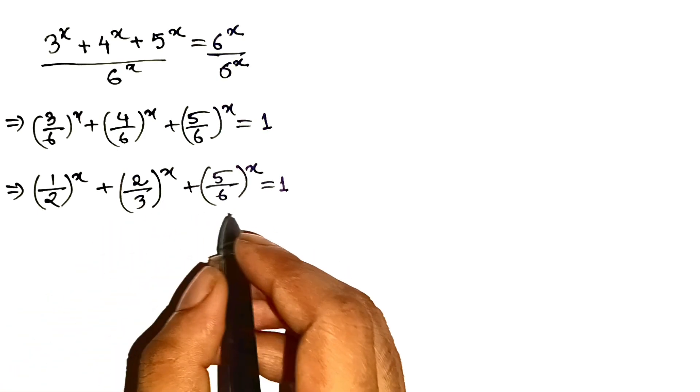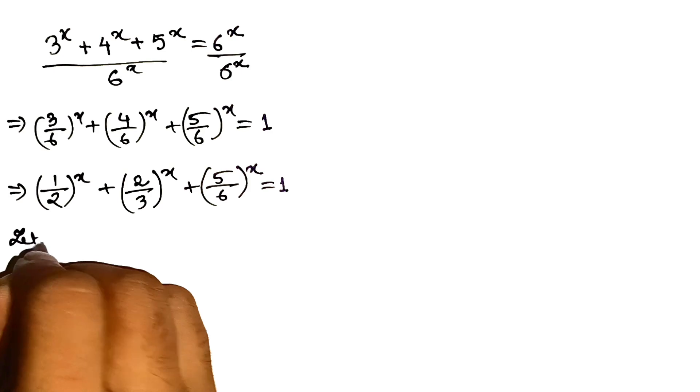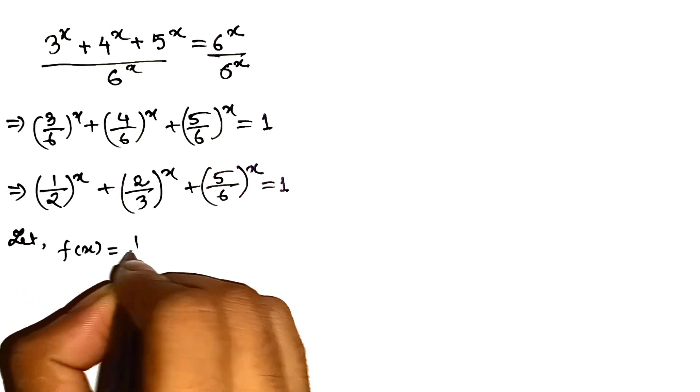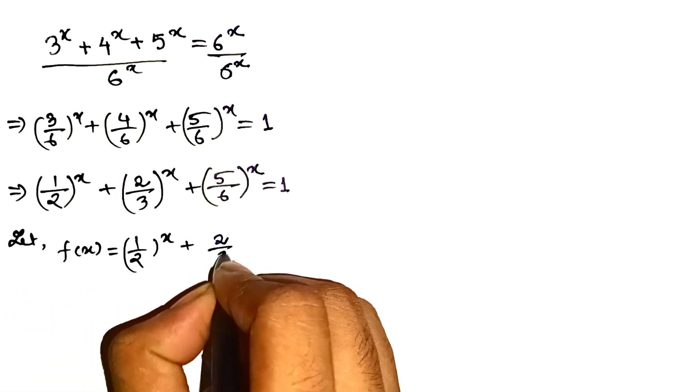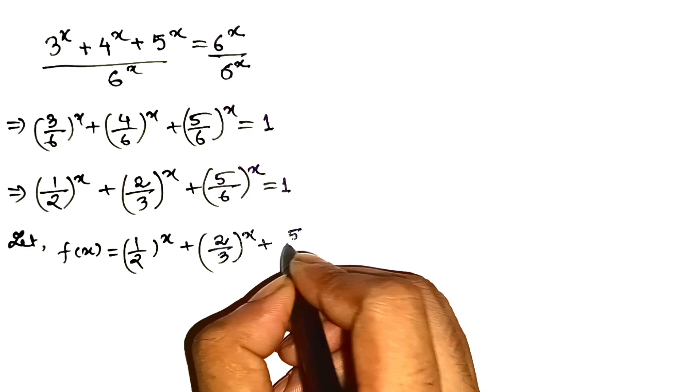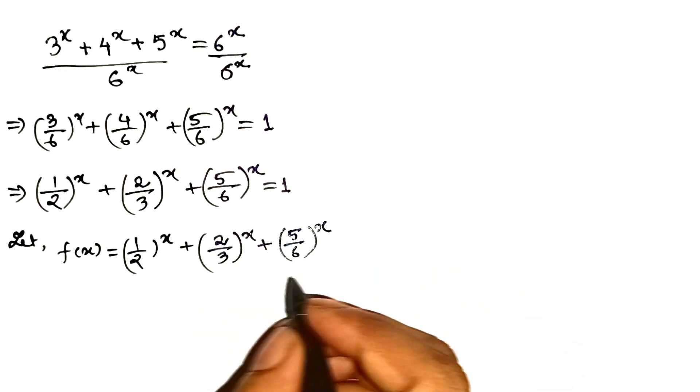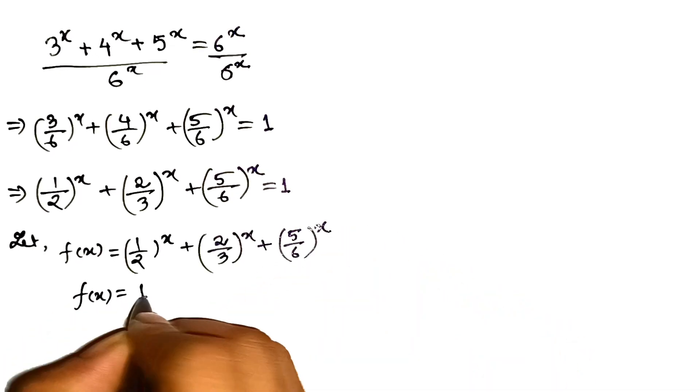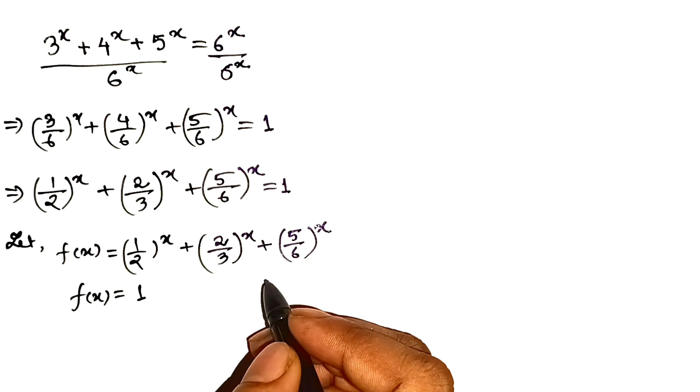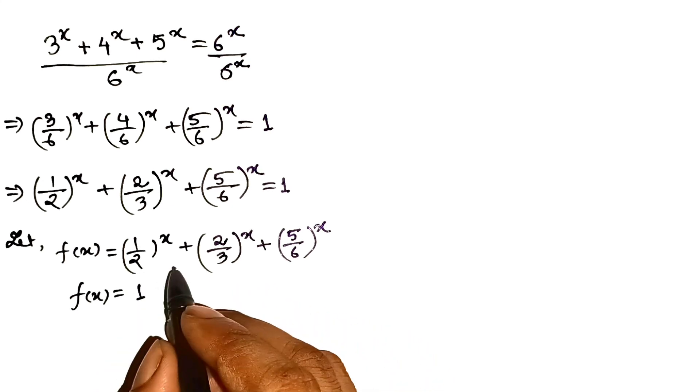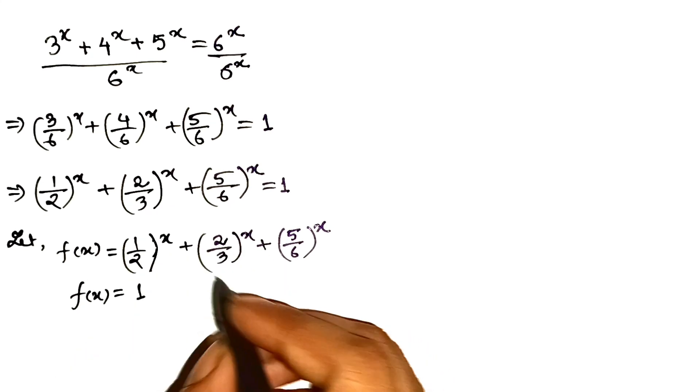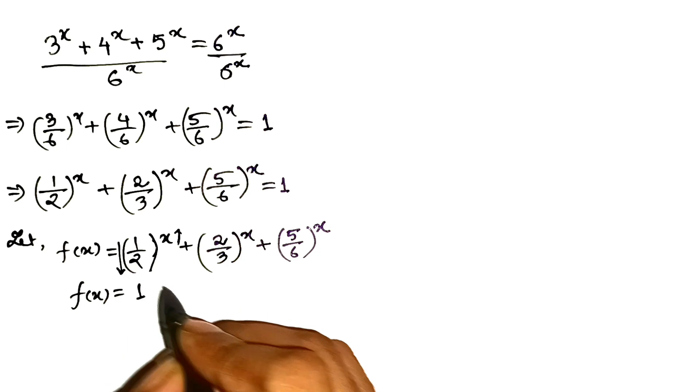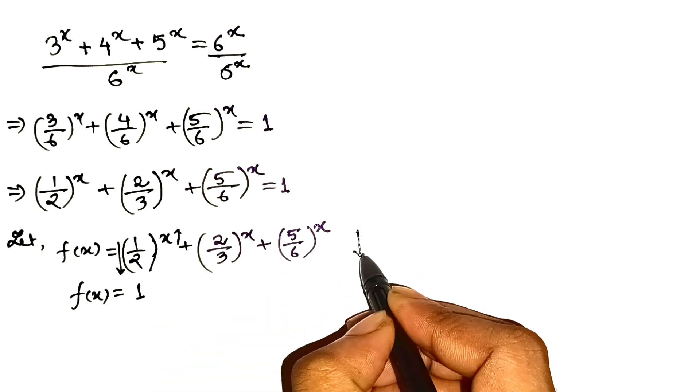Now let's wrap this into a neat little function. f at x equals 1 half to the power of x plus 2 thirds to the power of x plus 5 sixths to the power of x. And we want f at x equal to 1. Now here's the killer observation. Each piece is strictly decreasing. Make x bigger and the term gets smaller. Add them all up, still strictly decreasing.